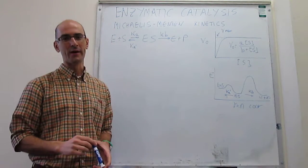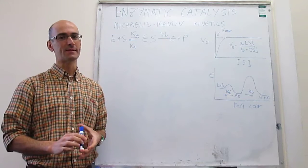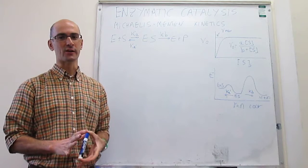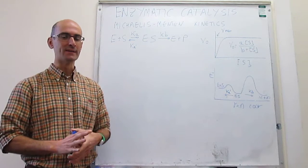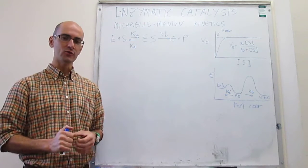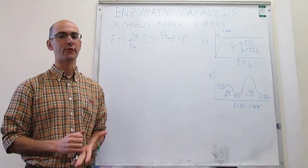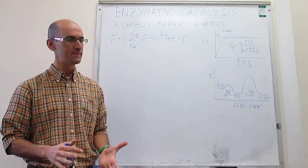In this video, we derive the rate law for the enzyme-catalyzed reaction according to the Michaelis-Menten mechanism, using the steady-state approximation for the intermediate.